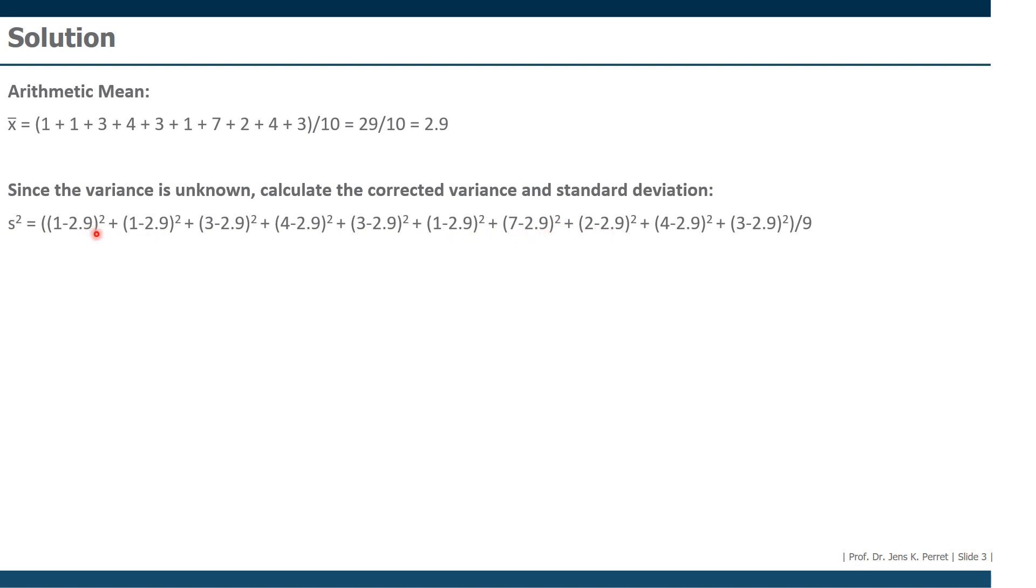Then we take the result to the power of 2. Adding up all of these sub-results, we divide this sum by 9. That's just the number of observations minus 1. So 10 observations minus 1 gives us the 9 we divide here. If we put this into a calculator we get as a final result 3.4333.